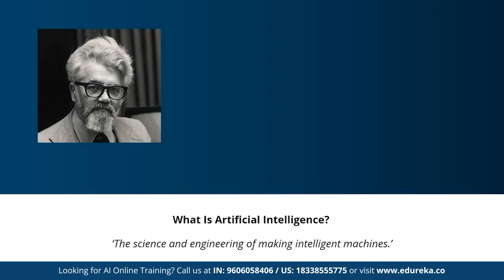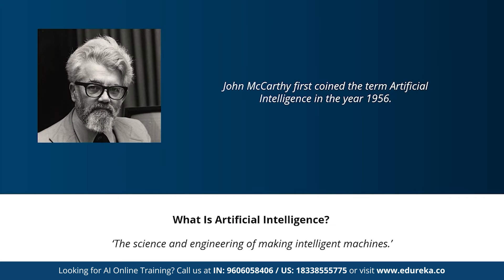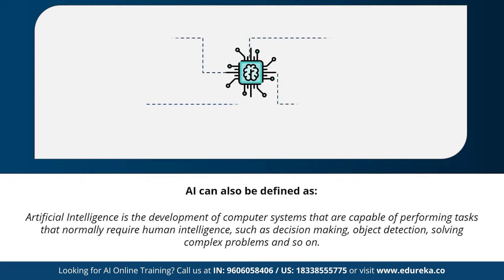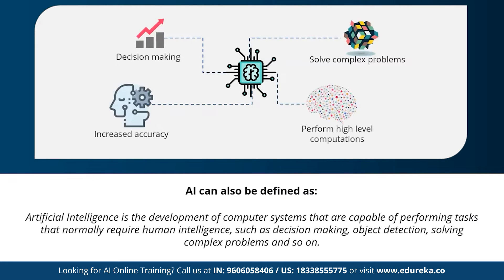The term 'artificial intelligence' was first coined by John McCarthy, who defined AI as the science and engineering of making intelligent machines. In other words, AI can be defined as the development of computer systems capable of performing tasks that require human intelligence, such as decision making, object detection, and solving complex problems. These are the main features of AI — high-level computations, improved accuracy of predictions, and solving complex problems.